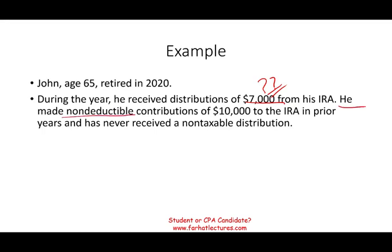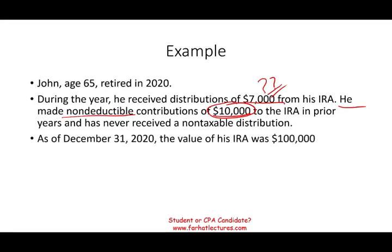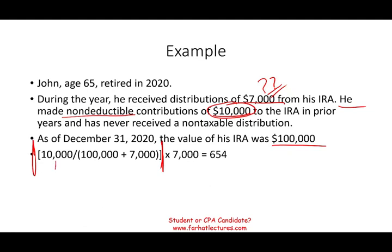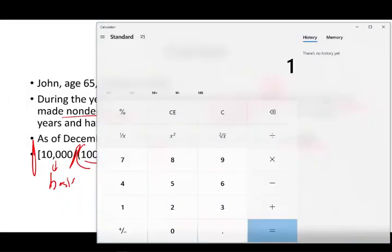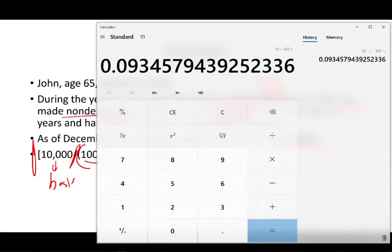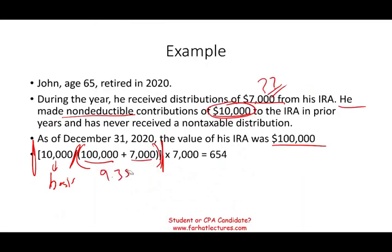But John made non-deductible contributions of $10,000 to his IRA in prior years and never received a non-taxable distribution. So his basis today is $10,000. The value of the IRA is $100,000. Now we use the formula: we take the basis of $10,000 — the non-deductible contributions — and divide it by the end-of-year value of $100,000 plus the distribution of $7,000. So $10,000 divided by $107,000 gives us approximately 9.345%.